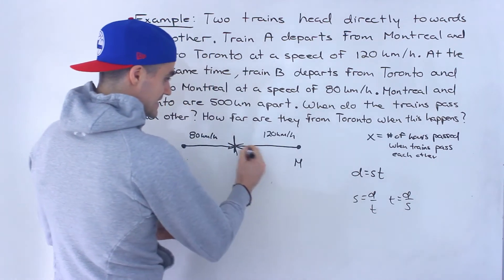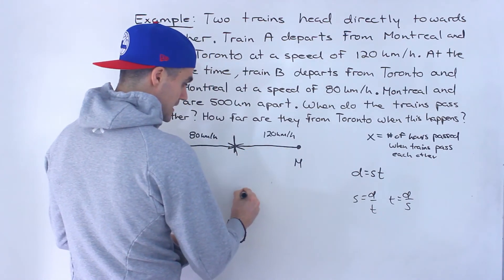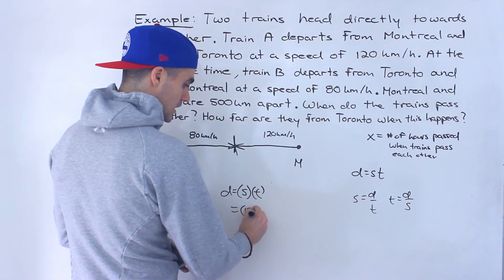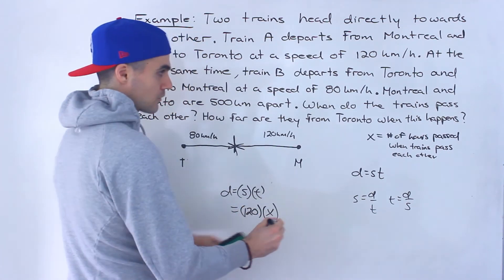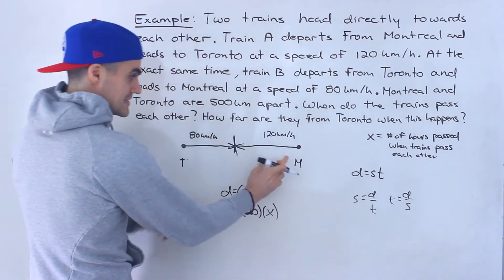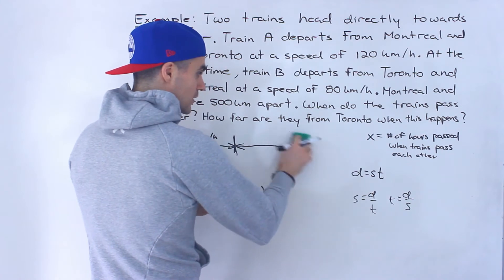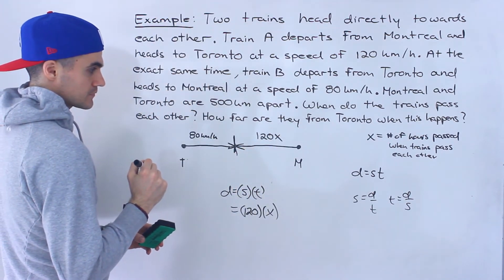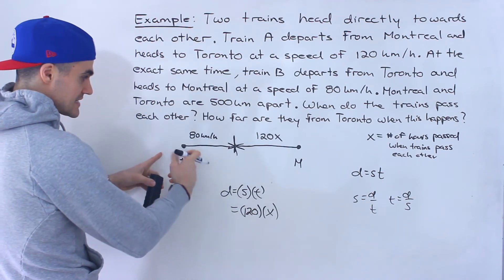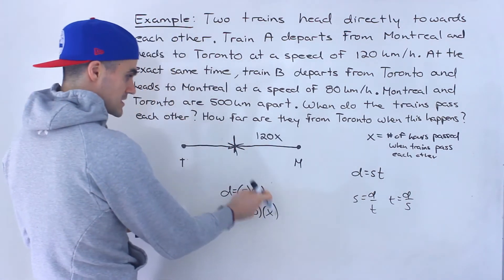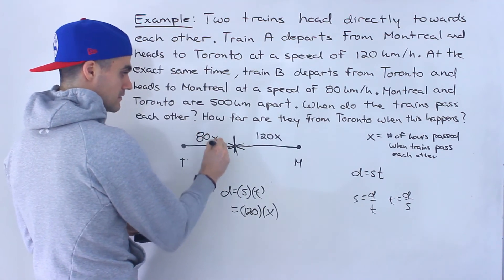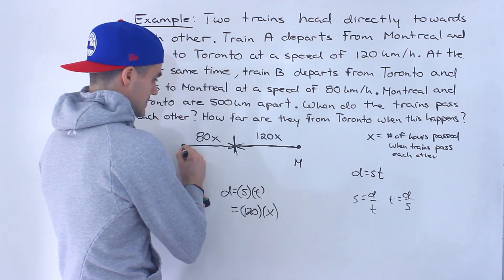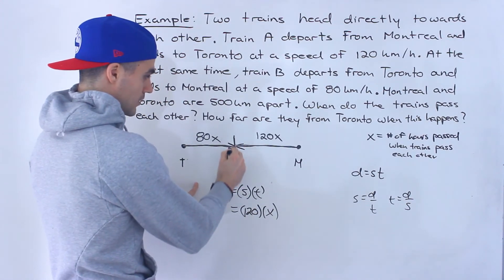If we let x equal the number of hours that pass and we have the speeds, we can create expressions for the distance both trains travel. The distance train A travels is distance equals speed times time, so it's 120 times x, which is 120x. The distance train B covers is its speed times time, so it's 80x. So train A covers 120x and train B covers 80x when they pass each other.